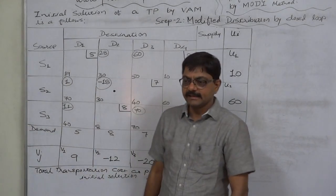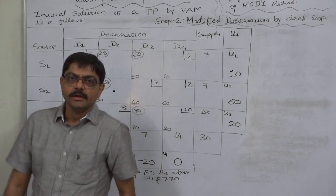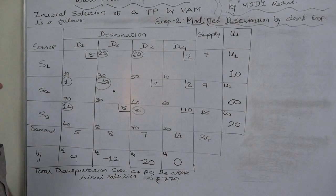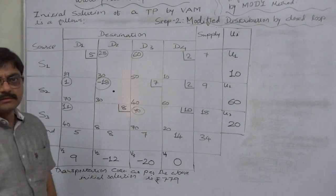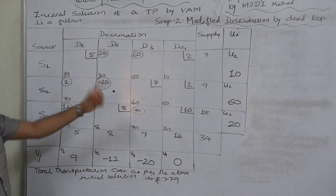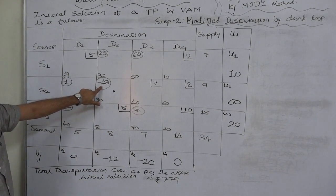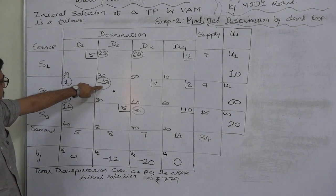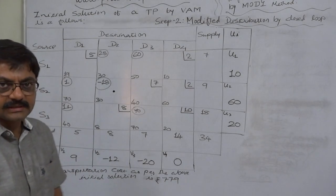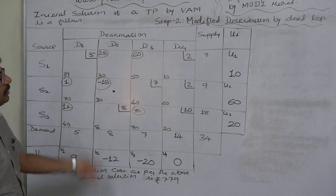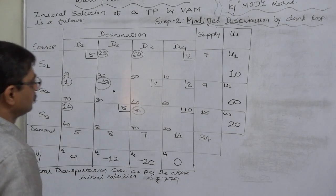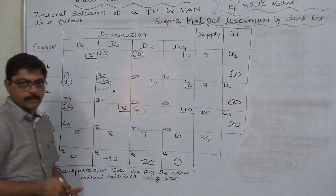Hello friends, welcome again. Let us take Step 2 of obtaining the optimal solution of a transportation problem by the MODI method. We have already discussed Step 1 — calculating DIJ values and checking whether any DIJ is negative. We got D22 as negative 18 and concluded that the initial solution was not optimal. Now, Step 2 is Modified Distribution, meaning we need to modify the allocations we made when getting the initial solution.